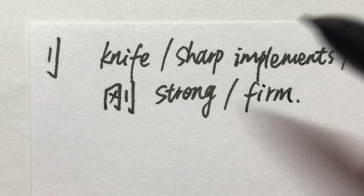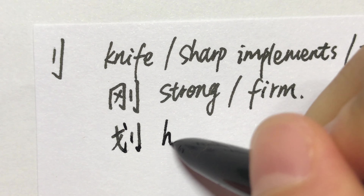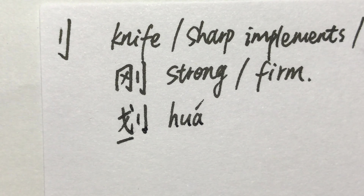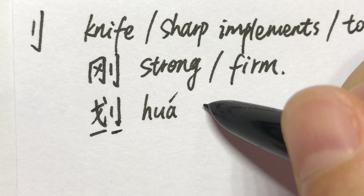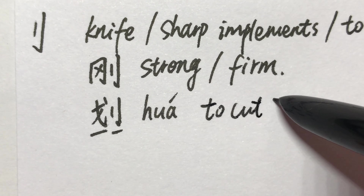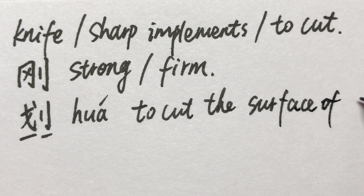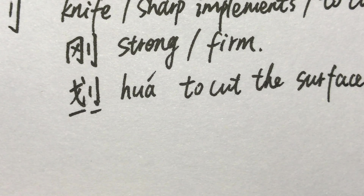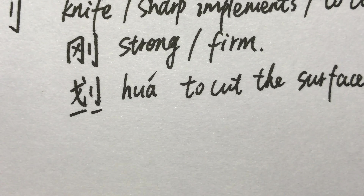Next one: 划 (huá). 戈 on the left is an ancient weapon; together with a knife, it means to cut the surface of something. For example: 他的手在一块尖石头上划了一个大口子。 His hand got a big cut on a sharp stone.